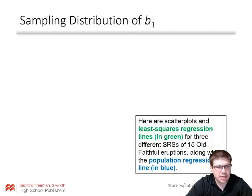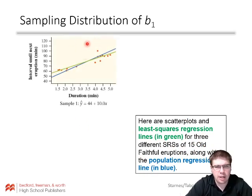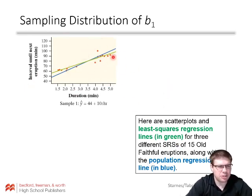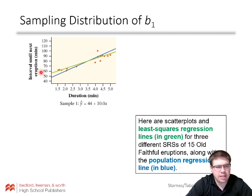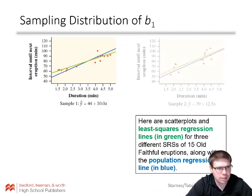Here are scatter plots and least squares regression lines in green for three different simple random samples of 15 Old Faithful eruptions, along with the population regression line in blue. Looking at the first sample of 15 red dots, we get a regression line that doesn't exactly match the population — the y-intercept is a little off and the slope is a little off, but it's kind of close and will tend to be close.